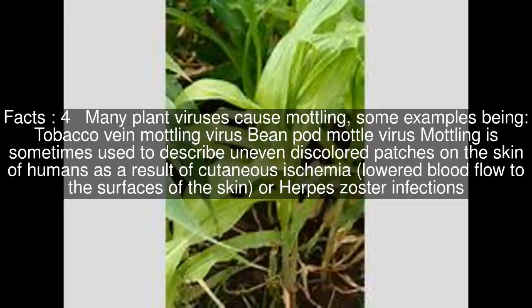tobacco vein mottling virus and bean pod mottle virus. Mottling is sometimes used to describe uneven discolored patches on the skin of humans as a result of cutaneous ischemia, lowered blood flow to the surfaces of the skin, or herpes zoster infections.